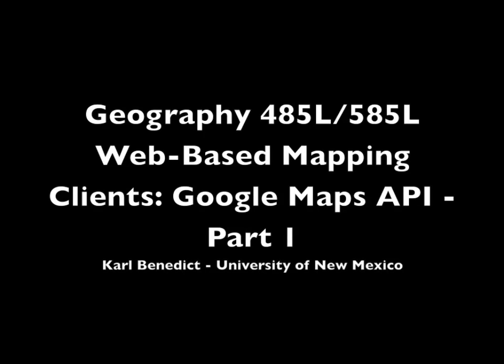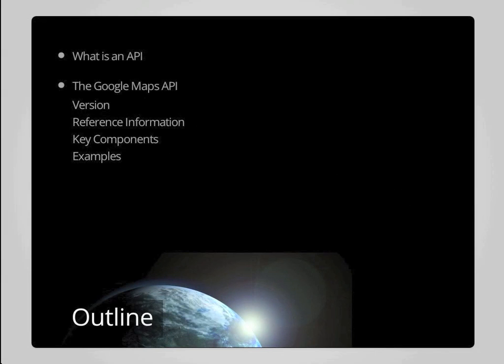Welcome to Geography 485-585-L, Internet Mapping, Module 2.2: Web-Based Mapping Clients, the Google Maps API, Part 1. This week we will be discussing what an API, or Application Programming Interface, is, and specifically the Google Maps API in terms of the version we will be working with in class, some background information, key components that enable different capabilities within a Google Maps-based viewer, and examples highlighting some of the capabilities of the Google Maps API.